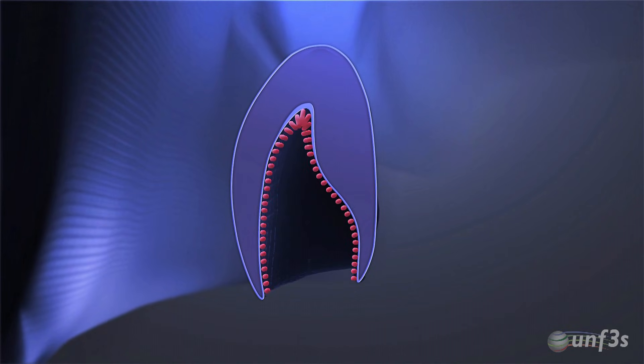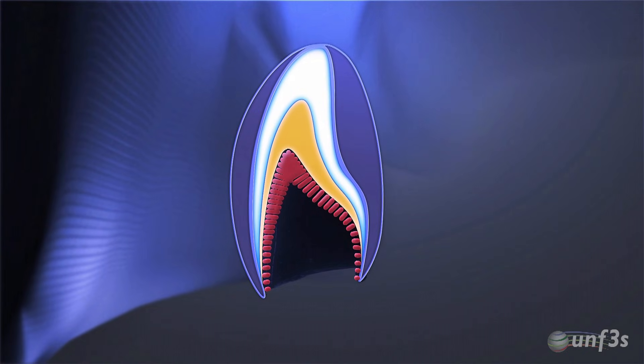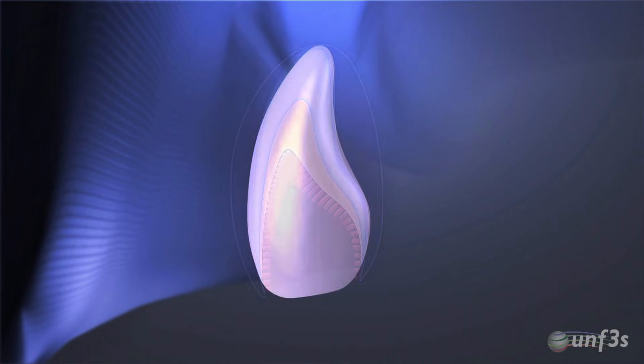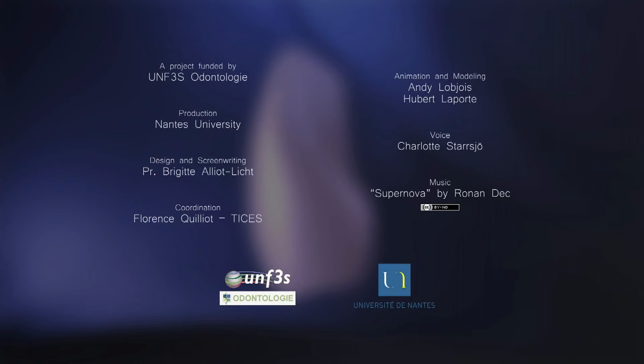Finally, the coronal dentin and enamel of the tooth are progressively formed along the cusp slopes.